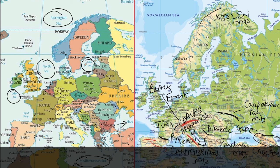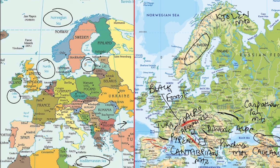In the northern region of the Scandinavian countries you will find the Kjolen mountains. This region is the Scandinavian Shield, which we discussed in previous videos. A shield is a region where many different types of minerals are found and these are very old deposits. These are the North European Plains.